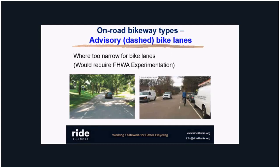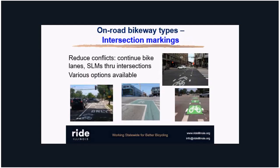Advisory dashed bike lanes are something fairly new and are covered by the Federal Highway Administration. For intersection markings, on the lower left you see a sharrow in the middle of a right-turn lane — one way to get bikes through an intersection when you've dropped a bike lane temporarily. There are also bike boxes and other techniques such as those seen in Chicago.